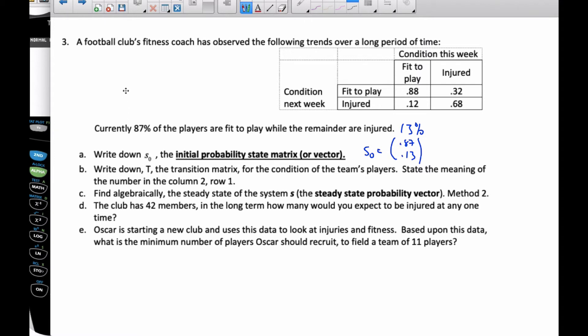So I also want to write down T. T is simply 0.88, 0.12 going down the column. At the top of the next column, 0.32 and 0.68 is T.